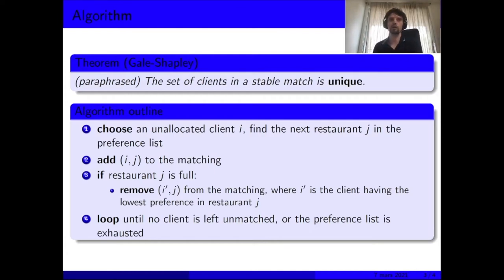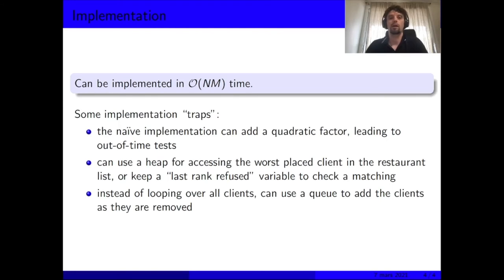If the restaurant is full, we have to find the client which has the least priority and was previously allocated. Remove that client from the restaurant, add them to the unmatched pool, and loop until either we don't have any client to match or we exhaust the preference list.